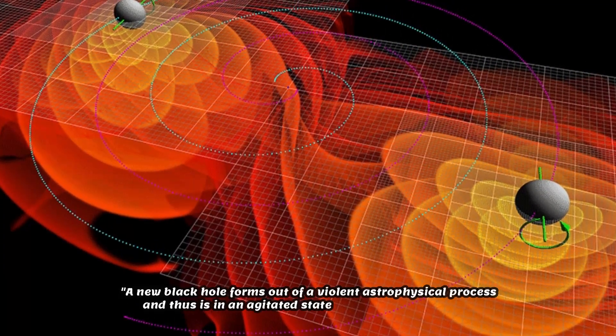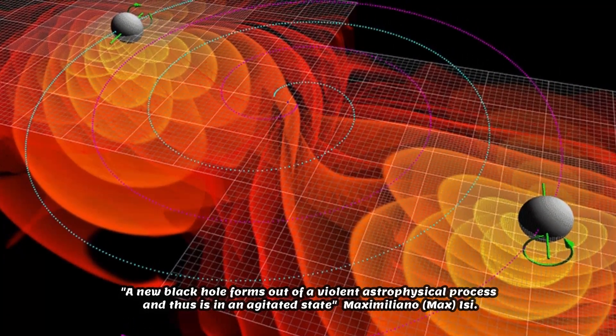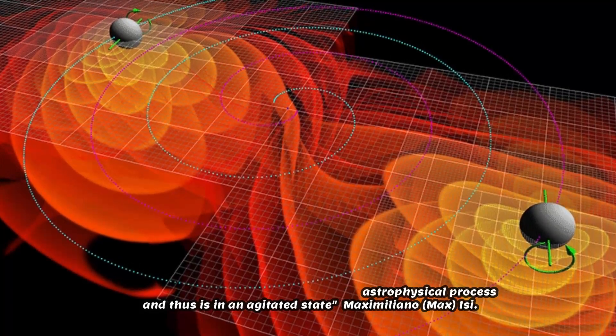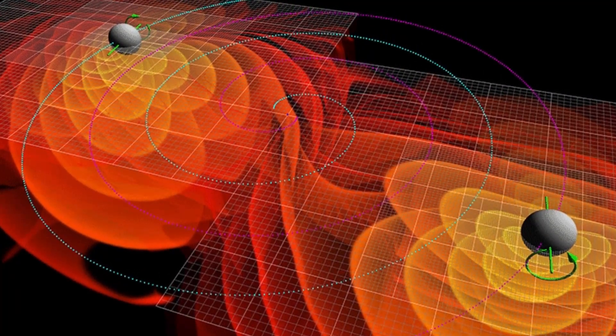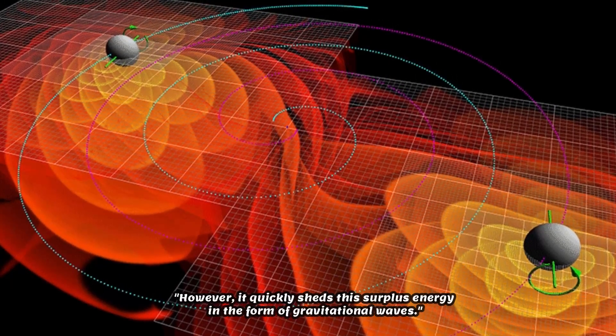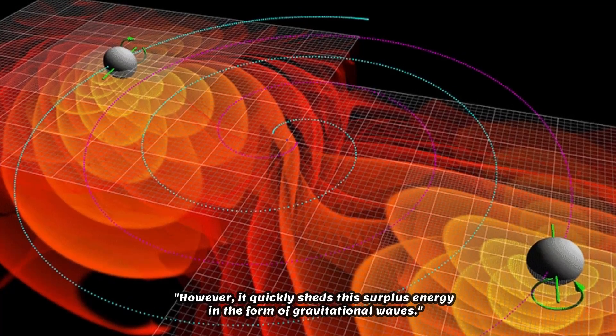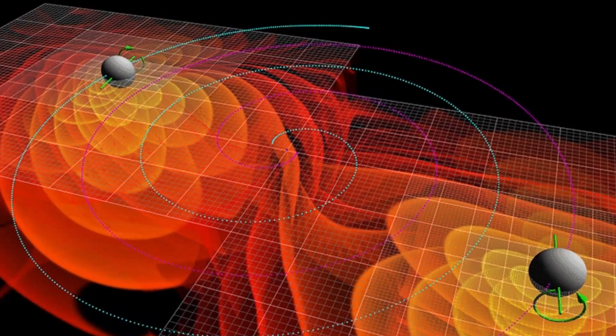A new black hole forms out of a violent astrophysical process and thus is in an agitated state, says Maximiliano Isi, lead author of the Physical Review Letters study, now at MIT. However, it quickly sheds this surplus energy in the form of gravitational waves.